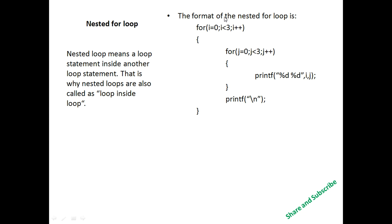This for loop is called the outer loop and this for loop is called the inner loop. If the outer loop condition is true, then we go to the inner loop. If the inner loop condition is also true, then we get the values of i and j.